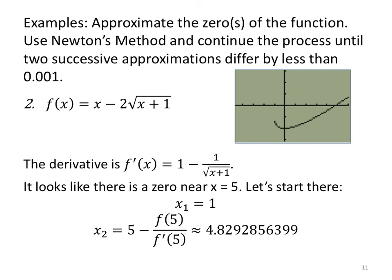Let's do it again. Approximate the zeros of the function using Newton's method and continue the process until two successive approximations differ by less than 0.001. Here's my graph: x - 2√(x+1). One, two, three, four, five. It looks like there's a zero near 5.